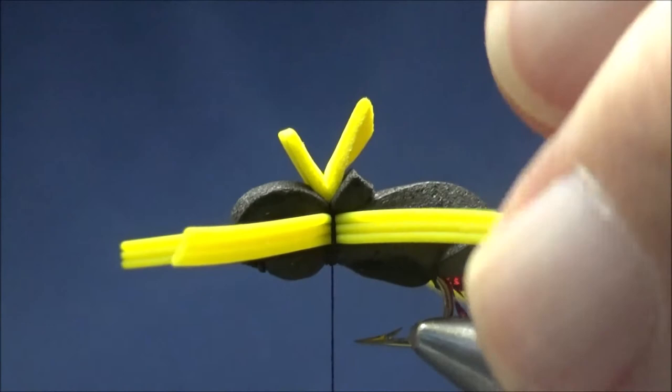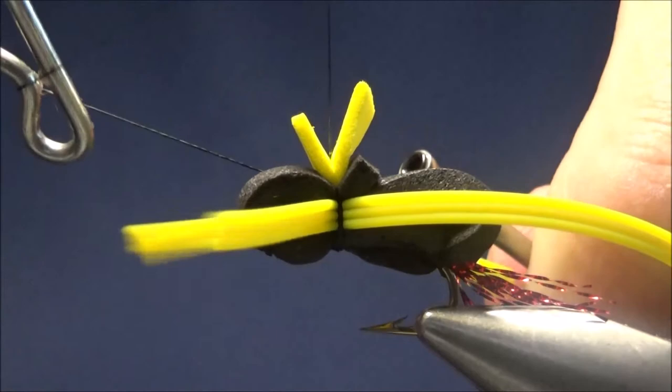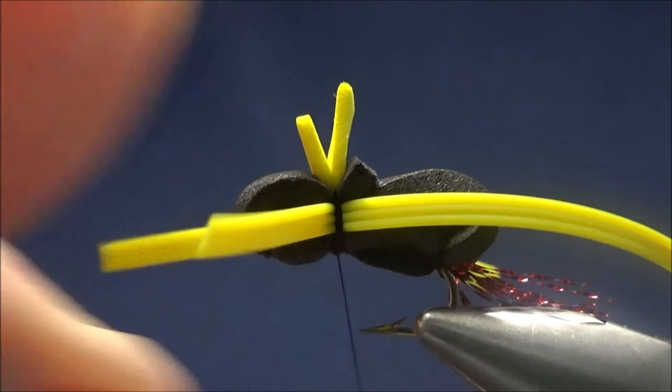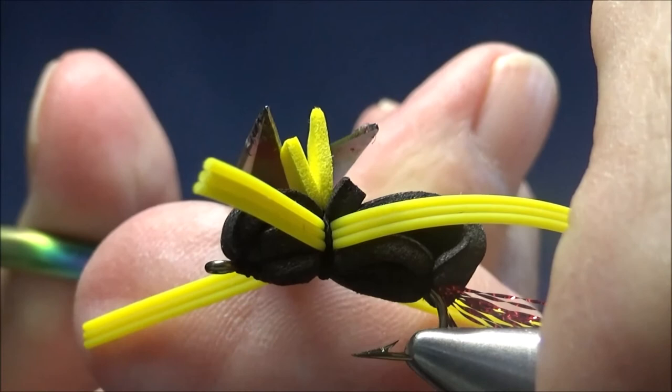I'm going to put in a yellow indicator. I'll rize it down good and tight, and now I can go ahead and whip finish. We'll cut off our thread. I'm going to cut off our indicator just a little bit.